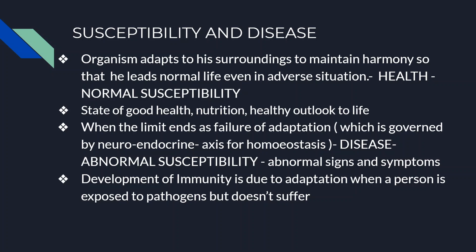Development of immunity is due to adaptation. When a person is exposed to pathogens but does not suffer from disease, this is because of immunity. Susceptibility helps in maintaining immunity by keeping the balance, by keeping homeostasis, and by keeping the regulation of the hypothalamic-pituitary-target organ axis.